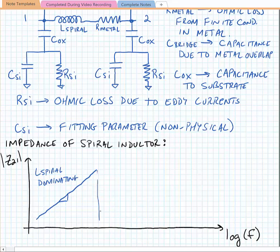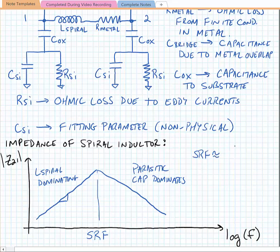At some frequency that we're going to call SRF, the self-resonant frequency, the structure resonates and the parasitic capacitance starts to dominate. And the impedance decreases at 20 dBs per decade. Our self-resonant frequency in these structures tends to be approximately equal to 1 over 2 pi times the square root of L-spiral times C-bridge.